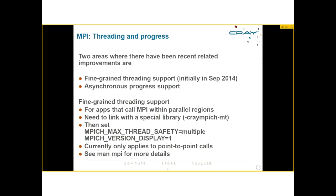Two areas of recent improvement are fine-grained threading support and asynchronous progress engine support. Fine-grained threading is for applications that call MPI within parallel regions, such as within an OpenMP thread. To use it, link with the special library using the dash-gray MPICH_MT flag, then set MPICH_MAX_THREAD_SAFETY to multiple. You may also set MPICH_VERSION_DISPLAY=1 to verify the version. This currently only applies to point-to-point calls — check the man page for more details.